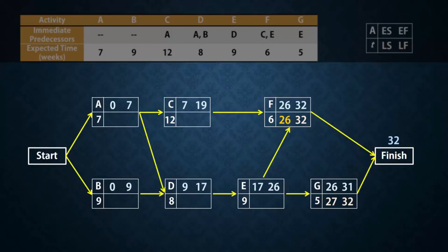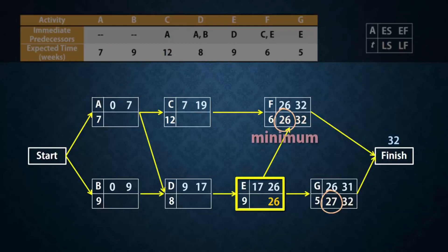E has two successors, F and G. The latest start times are 26 and 27 respectively. As a result, the latest time E has to finish has to be 26, in order for F to start. In essence, when doing the backward pass, the latest finish time of an activity must be the minimum of the latest start times of its successors. Thus, the latest start time for E will be 26 minus 9, which gives 17.